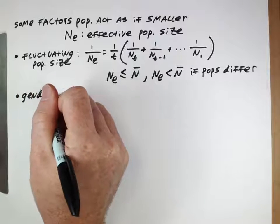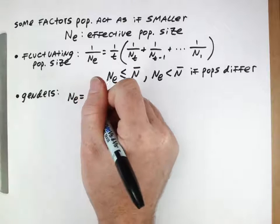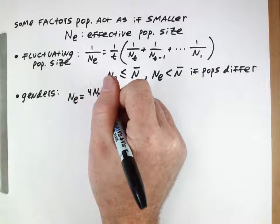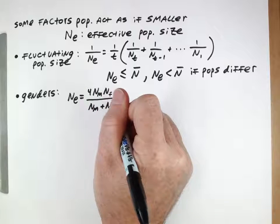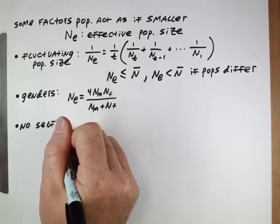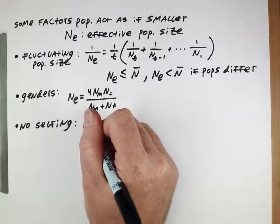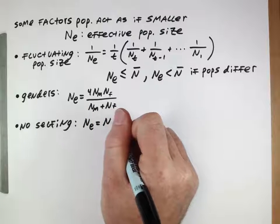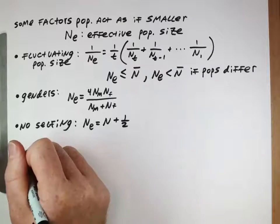If we have different genders — males and females in a population — the effective population size is given by 4 times the number of males times the number of females, all divided by the number of males plus the number of females. If there is no selfing, meaning individuals cannot mate with themselves (which was a possibility in our panmictic model where we thought about groups of alleles), then the effective population size is the actual population size plus one-half — which doesn't really make any practical difference for normal populations.